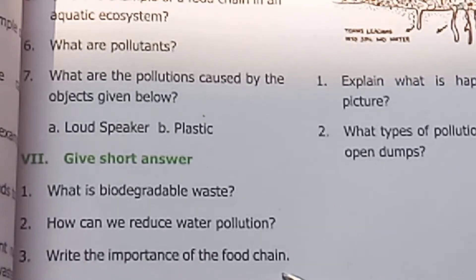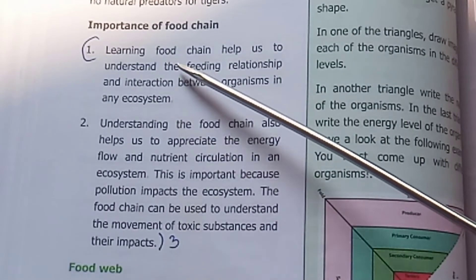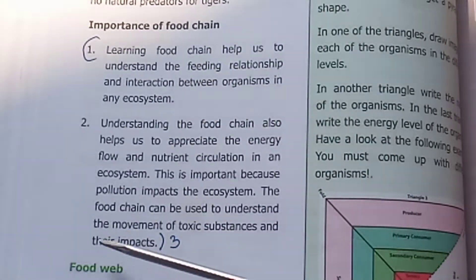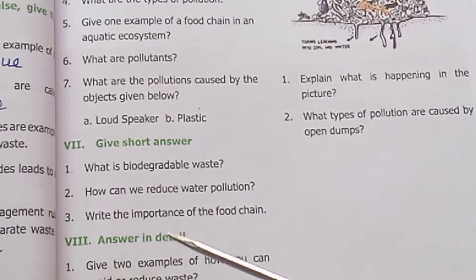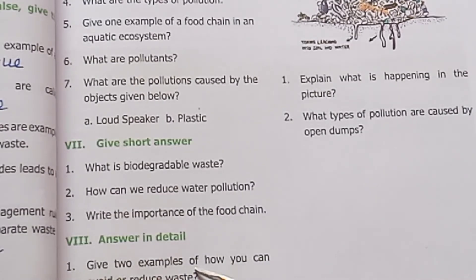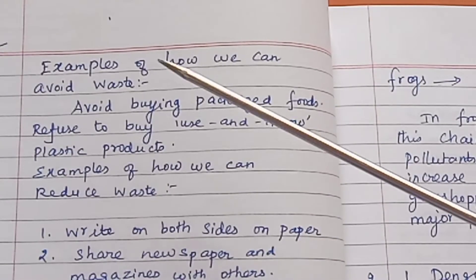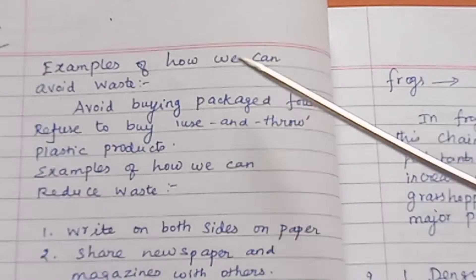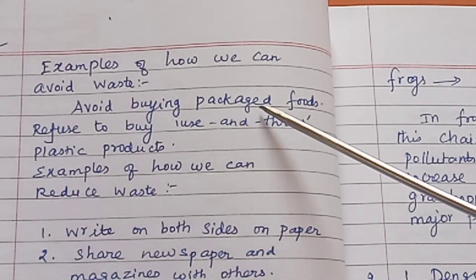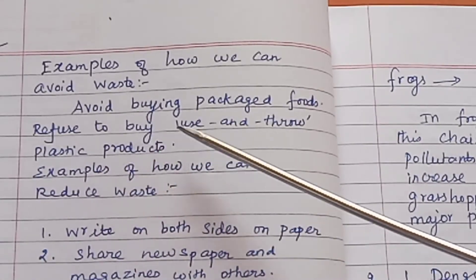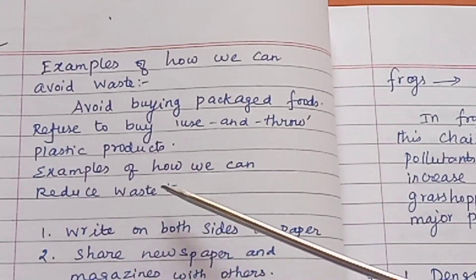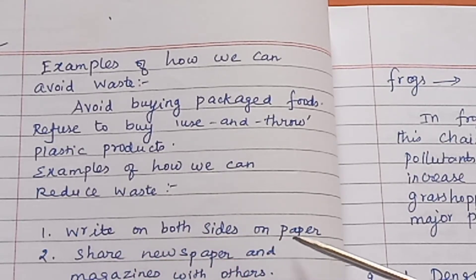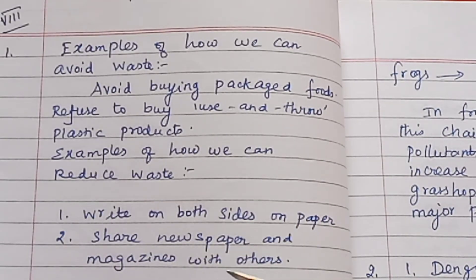Write the importance of the food chain. Give two examples of how you can avoid or reduce waste. Examples of how to avoid waste: avoid buying packaged foods; refuse to buy use-and-throw plastic products. Examples of how to reduce waste: write on both sides of paper; share newspapers and magazines with others.